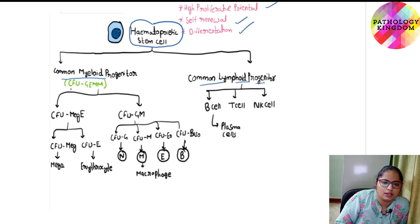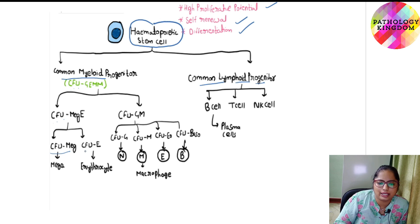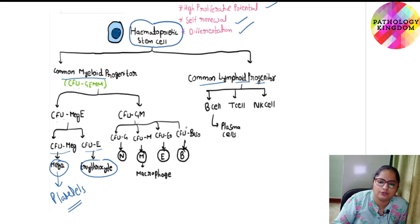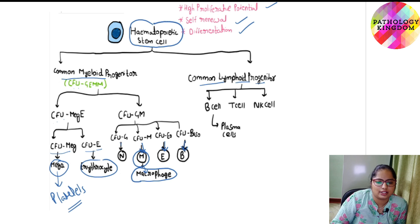The common myeloid progenitor, also known as colony forming unit granulocyte-erythroid-monocyte-macrophage, gives rise to the colony forming unit megakaryocyte-erythroid. This further gives rise to colony forming unit megakaryocyte and colony forming unit erythroid. Erythroid gives rise to erythrocytes, and megakaryocyte gives rise to platelets. Colony forming unit granulocyte-macrophage gives rise to colony forming units for granulocyte, macrophage, eosinophil, and basophil. These mature into basophil, eosinophil, monocyte (which becomes macrophage in tissues), and neutrophil.